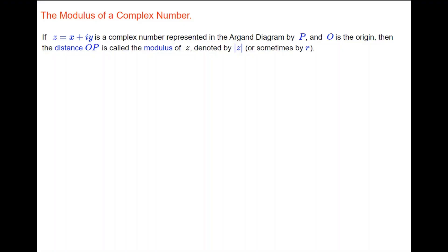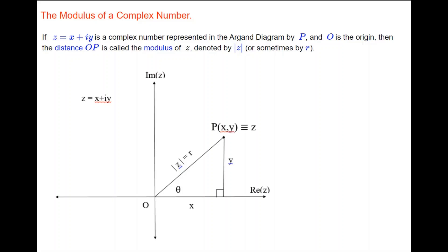If Z equals X plus iY is a complex number represented in the Argand diagram by the point P, and O is the origin, then the distance OP is called the modulus of Z. It's denoted by Z inside two vertical lines, and sometimes denoted by small r. If we plot the point Z in the Argand diagram, we go across X and up Y to point P. The distance OP is the length of the hypotenuse of the right-angle triangle, and that is the modulus of Z.